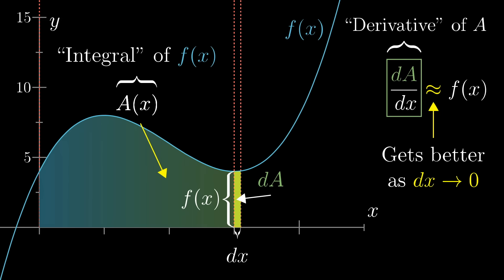This ratio, dA divided by dx, is called the derivative of A, or more technically, the derivative is whatever this ratio approaches as dx gets smaller and smaller.